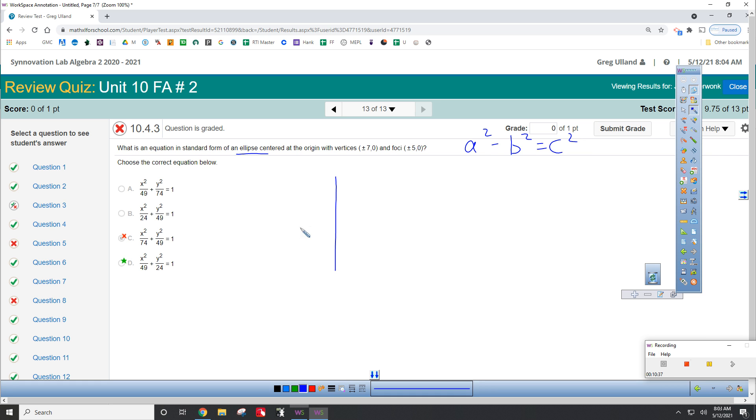You've got vertices at 7 and negative 7, and then at 5 and negative 5. So, it's an ellipse. Notice that it's wider than it is tall. This is 7, and this is 5. So, a squared is 49, and b squared is 25. Oh, those are foci. Those are foci. Excuse me.